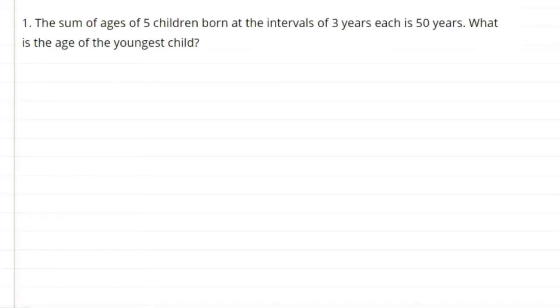Hello viewers, welcome to my channel. This is Geeta. The sum of ages of 5 children born at the intervals of 3 years each is 50 years. What is the age of the youngest child?